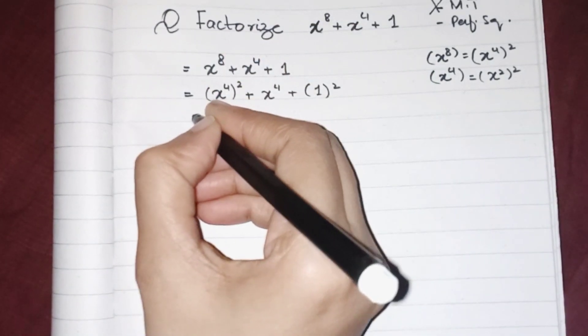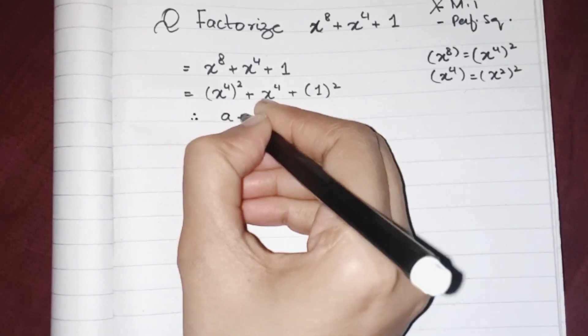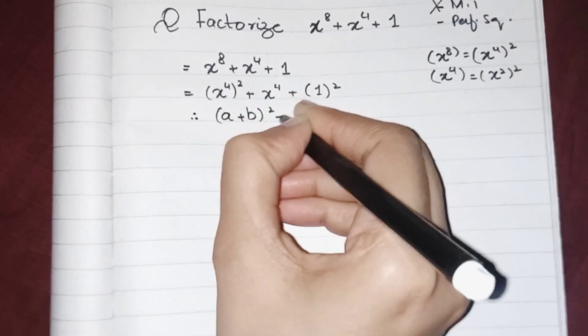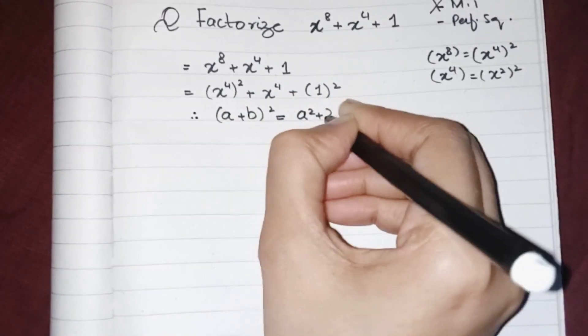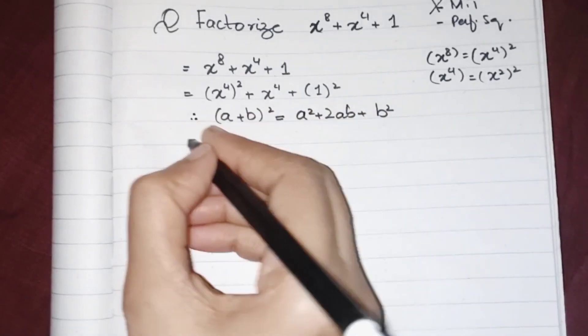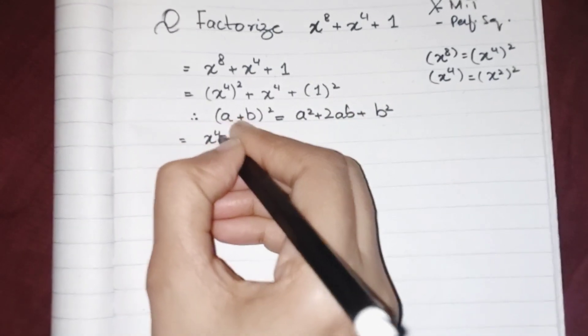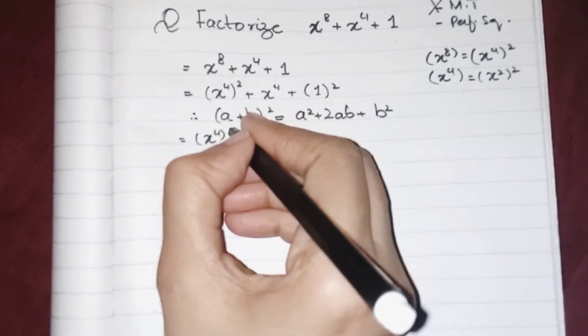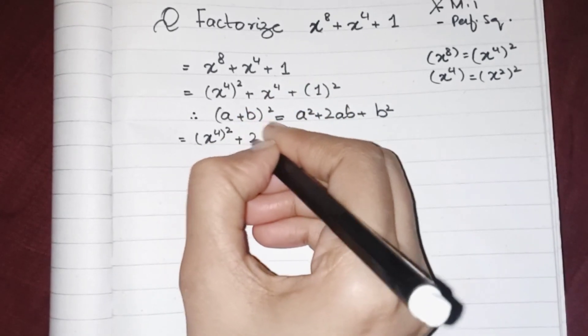So we can write it like (a + b)^2 equals a^2 plus 2ab plus b^2. So now let's check it out whether this one is our 2ab or not. Plus 2ab.